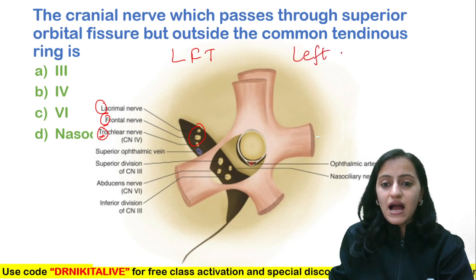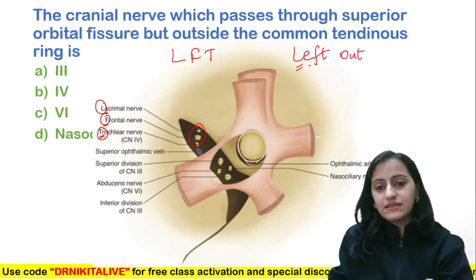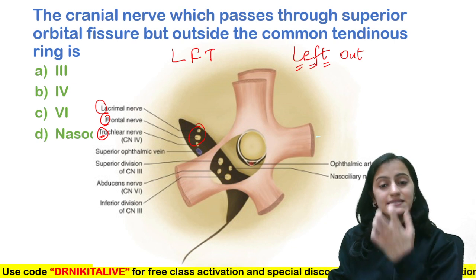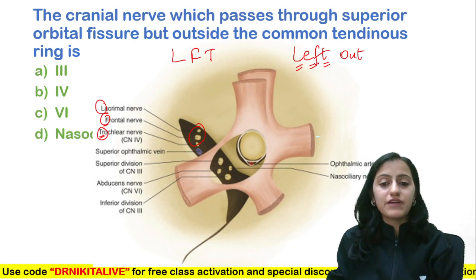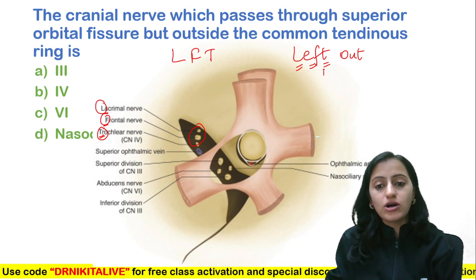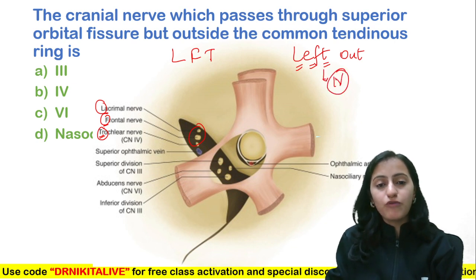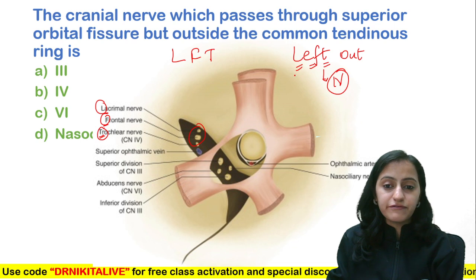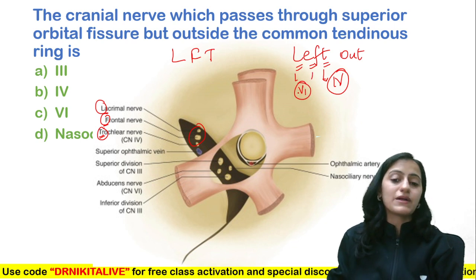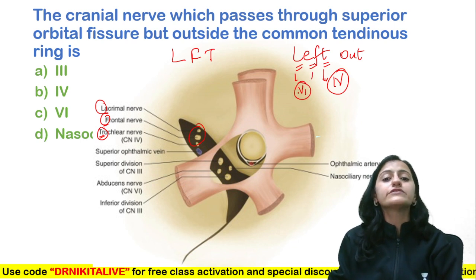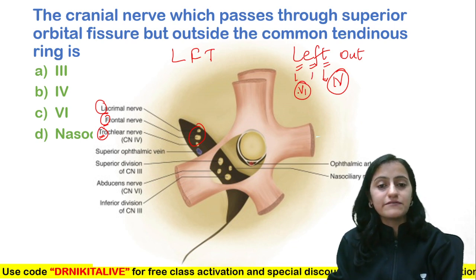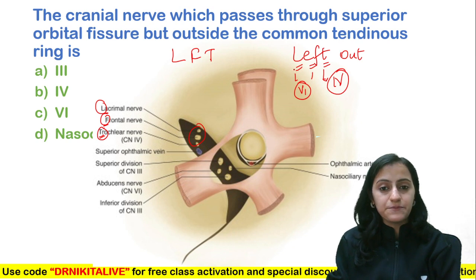Remember: left outside is LFT — lacrimal, frontal, and trochlear. The fourth cranial nerve, trochlear, and the lacrimal and frontal branches of the ophthalmic division of the trigeminal nerve are outside the common tendinous ring.